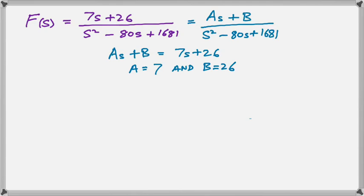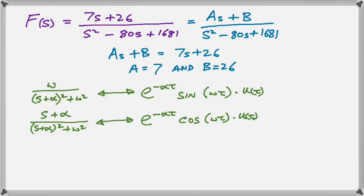The first thing we observe is that we can write the numerator as As plus B, in which case the A would be 7 and the B would be 26. So now we can begin to manipulate. We are going to show you the two transforms that we are going to be using — there they are in green. These are standard transforms, which you can get out of any reference book or even on the internet.